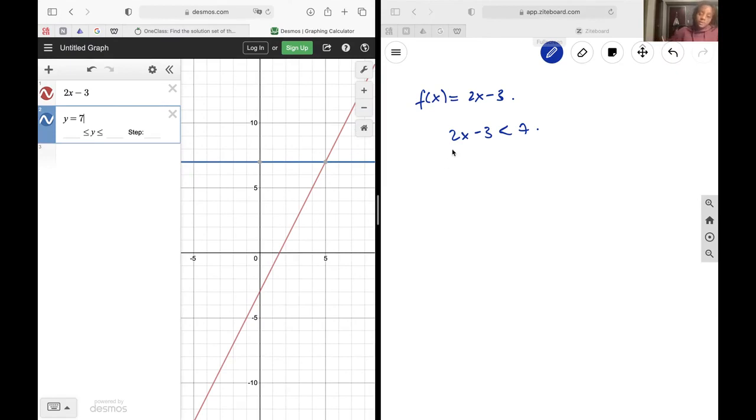You get 2x minus 3 less than 7. You can move the 3 over to become 2x is less than 7 plus 3, so 2x is less than 10. Divide out the 2 and we get when x is less than 5, which is exactly what we see here.